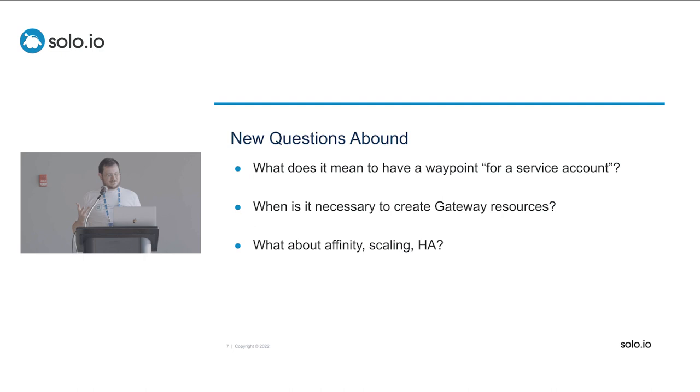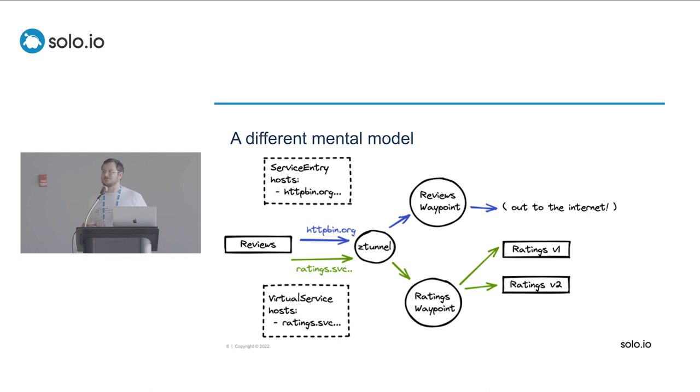So this begs a number of questions as you actually get to use it. What does it mean to have a waypoint for a service account in the first place? If you're responsible for specifying when to use these waypoint proxies, how do you know when it is necessary to create them? How do you know which ones you need? And then there's the question about affinity, like node affinity of these waypoint proxies, scaling, high availability, what sort of API is available for these. So diving in a little bit deeper, as it turns out, especially if you're familiar with Istio, although the Istio API has not changed for ambient, there is a fairly different mental model that you need to adjust to and have in your mind.